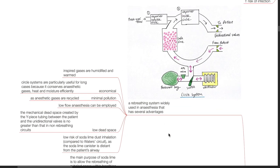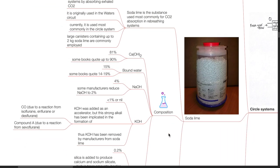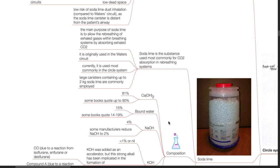There is a low risk of soda lime dust inhalation compared to the water circuit, as the soda lime canister is distant from the patient's airway. Soda lime is the substance commonly used for CO2 absorption in re-breathing systems. The main purpose of soda lime is to allow re-breathing of exhaled gases by absorbing exhaled CO2. It was originally used in the water circuit but is currently used most commonly in circle systems. Large canisters containing up to 2 kg of soda lime are commonly employed.